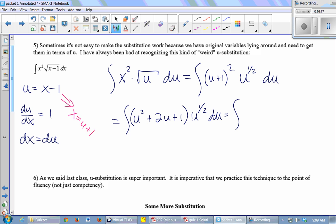So this will become the integral of (u² + 2u + 1) times u^(1/2) du. Distribute your u^(1/2). When you multiply like bases, you add the exponents. So this would be u^(5/2) plus 2u^(3/2) plus u^(1/2) du.